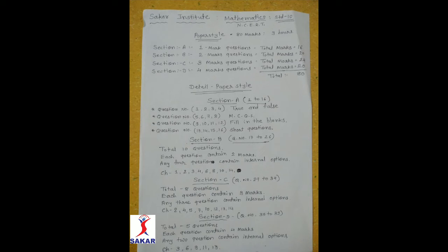In Section C, question numbers 27 to 34. Total 8 questions, each question carries 3 marks. Any 3 questions contain internal options. In this section, questions are asked from chapters 2, 4, 5, 7, 10, 12, 13 and 14.